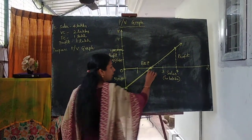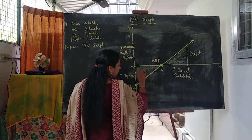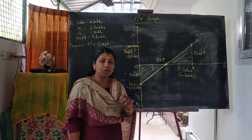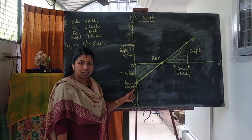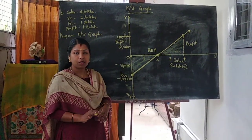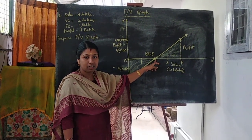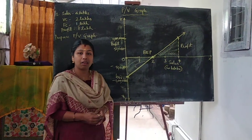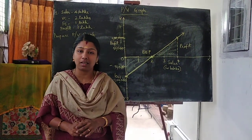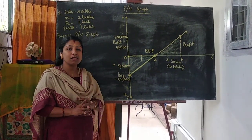The above region indicates the profit region and the below region indicates the loss region. To draw a PV graph, you need only 2 points: maximum loss which is fixed cost, and maximum profit which is the given profit. Draw the profit line — where it intersects the sales line, that is called the break even point. This is a very simple form of break even chart, and it can be drawn with any data helpful for a break even chart.